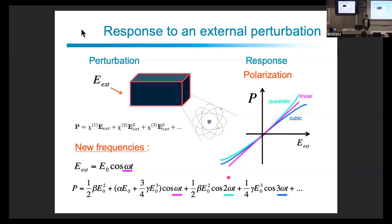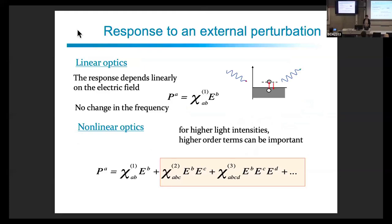The first term is just proportional to the external field. When we add all the other terms we change the dependence on the external field: the quadratic terms give second order response, the cubic gives third order, each with different behavior in terms of field amplitude. The first term — linear optics — is proportional to the external field, and its coefficient is called the susceptibility χ⁽¹⁾. All higher order terms starting at second order are considered non-linear optics.